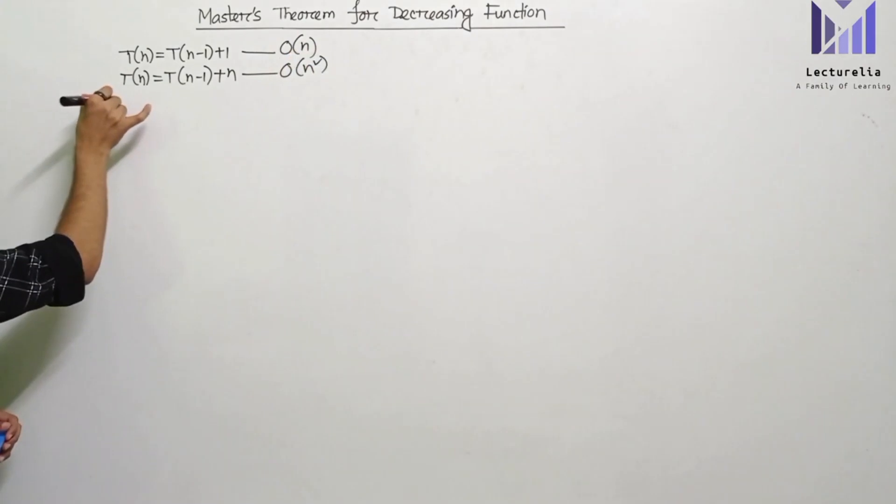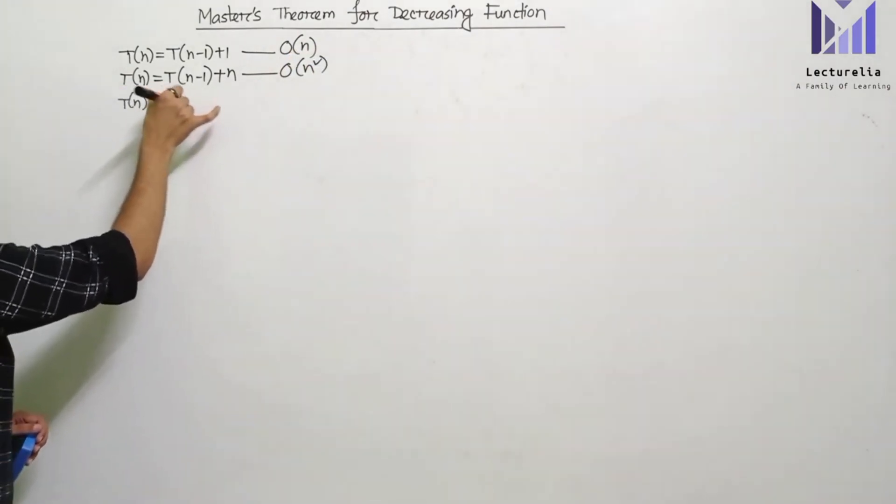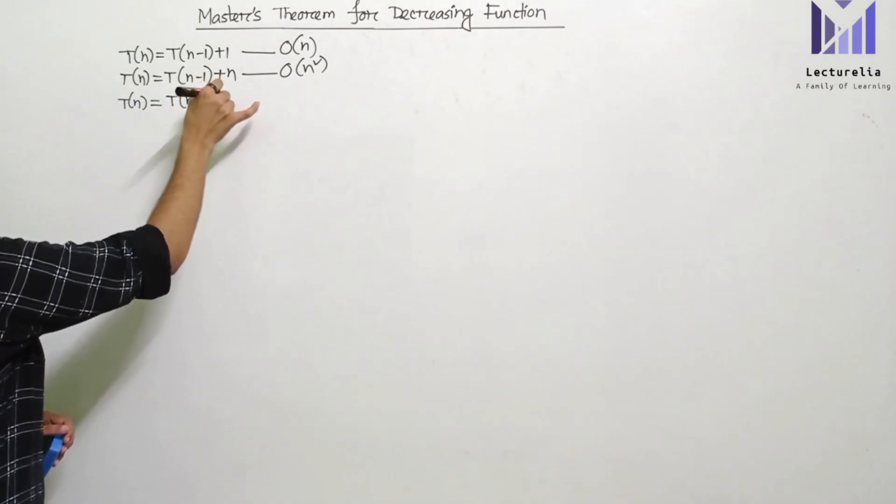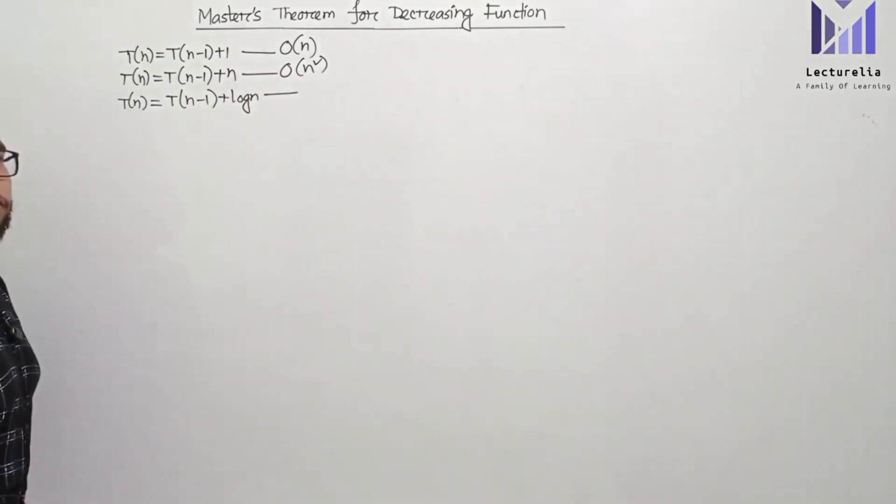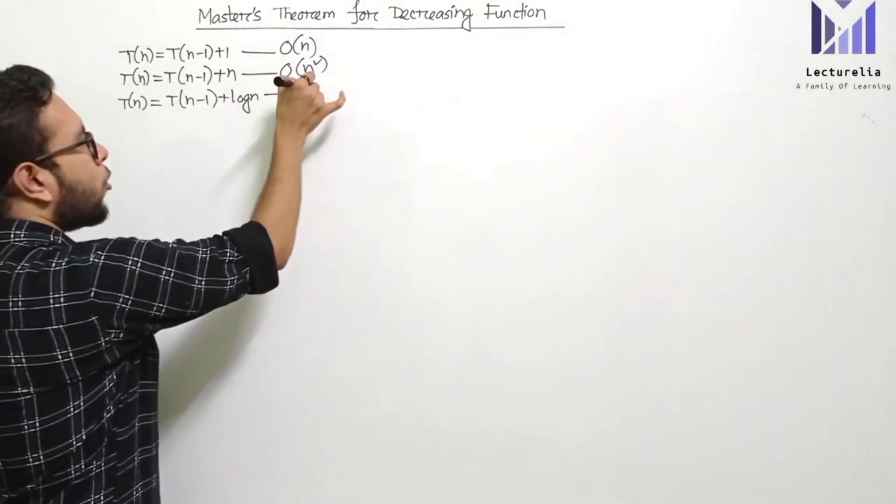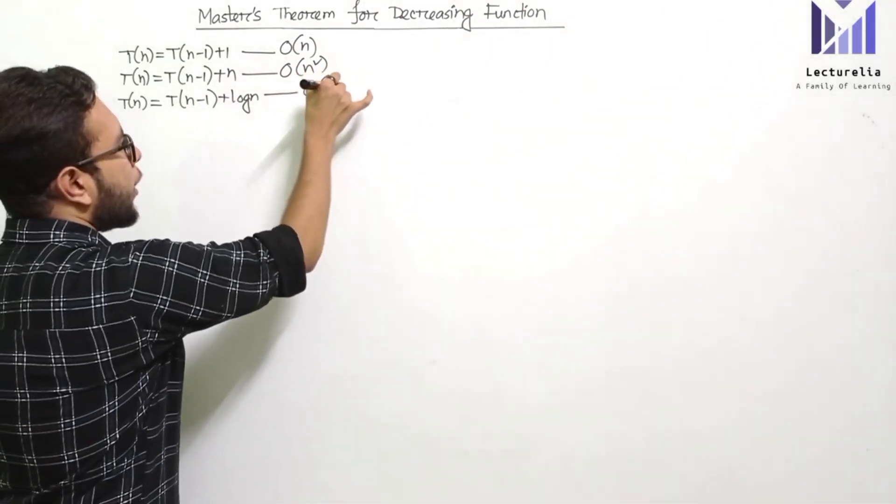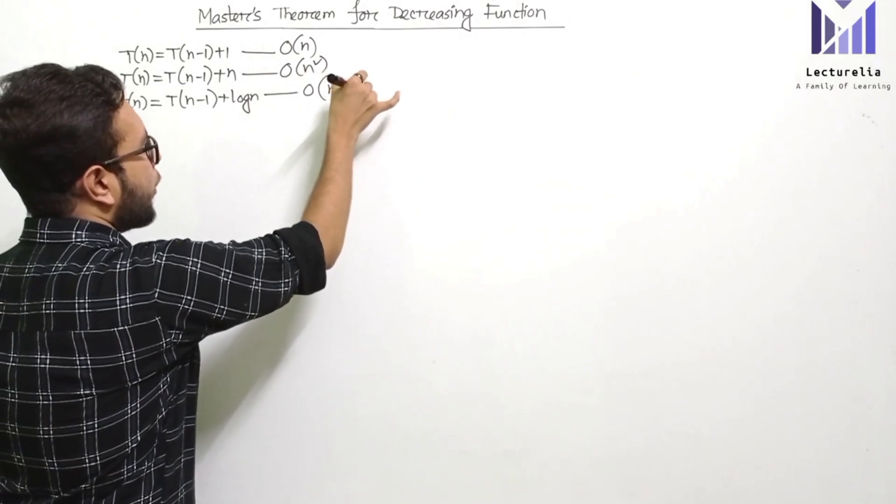In another lecture video, we covered T(n) = T(n-1) + log n, and we found the time complexity is order of n log n.